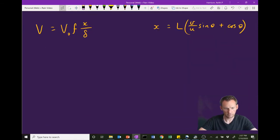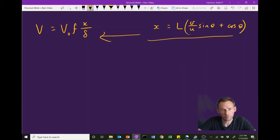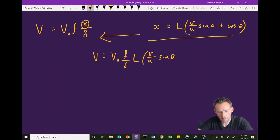Here is our result from earlier on, and I'm going to substitute this expression for x into that original volume result. So v is v naught f over delta, and then instead of x we have L v over u sine theta plus cosine theta.